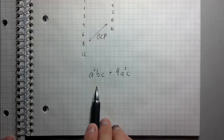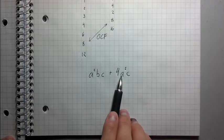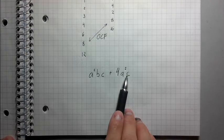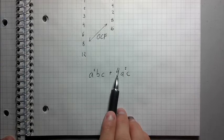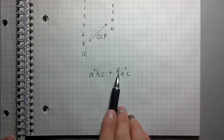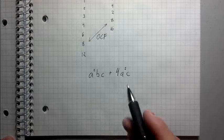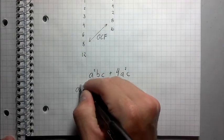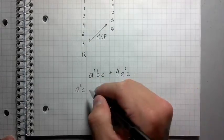Well, they have an a squared in common, and they have a c in common. B and 4 are not in common. So b and 4 cannot be part of the greatest common factor. In fact, the greatest common factor in this case would just be a squared c.